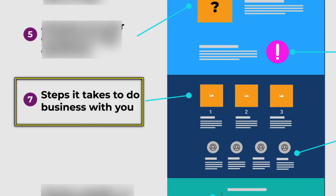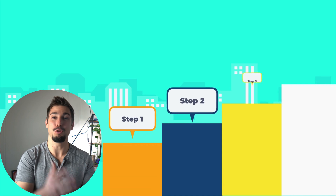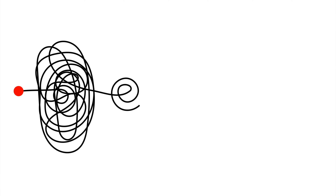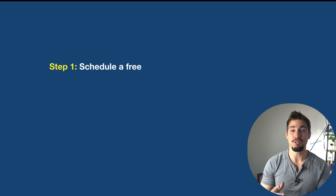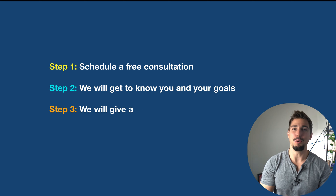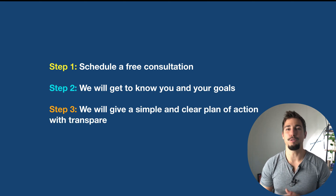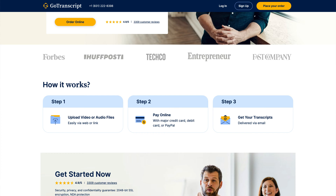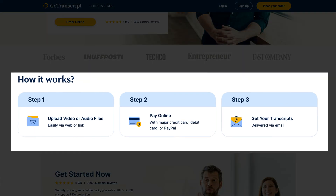Number seven: your service page needs a steps section. This is where you show the process of how to work with you in three steps or less. Studies have shown that after three steps, we remember less and less of a list. Plus, the goal of this section is to make it seem super simple to work with you — even if your internal process is way more complicated, you need to zoom way out. For example: step one, schedule a free consultation; step two, we'll get to know you and your goals; step three, we'll give you a simple and clear plan of action with transparent pricing. I like how one transcription service website lays it out: upload, pay, get transcript — very straightforward.